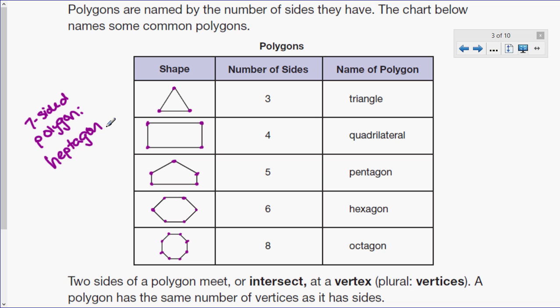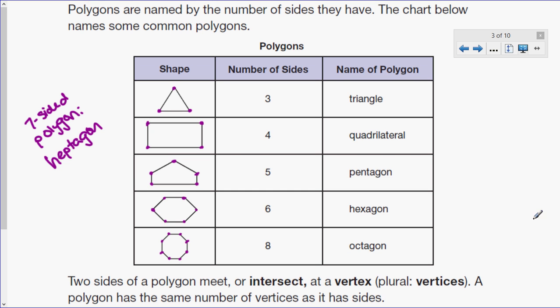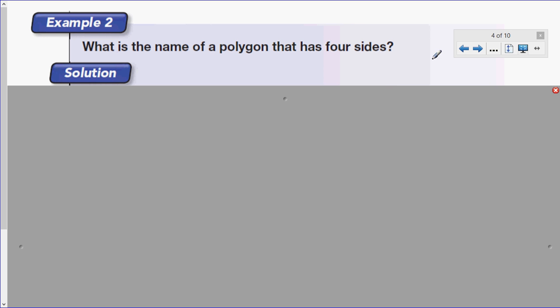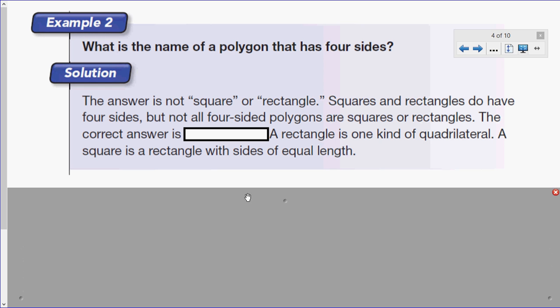It does say down here what I just mentioned: two sides of a polygon meet or intersect at a vertex, the plural is vertices, and a polygon has the same number of vertices as it has sides. So please try to remember those names of the common polygons. Let's move on. Example two. What is the name of a polygon that has four sides? I actually kind of copied the solution from the textbook here.